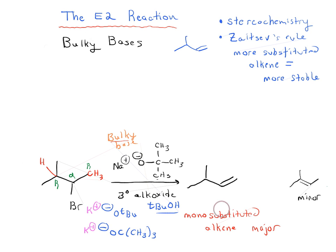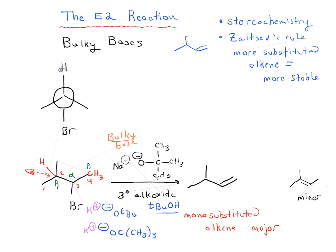Steric hindrance is going to make the formation of the more substituted alkene less favorable. Drawing a Newman projection along carbon 2 to carbon 3, we want to make sure that our hydrogen and our bromine are anti-periplanar. So the hydrogen would have to be up, the bromine would be down, and we could draw CH3 here and a CH3 here.